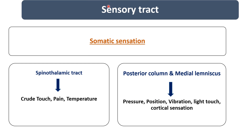There are mainly two sensory tracts for somatic sensations. One is the spinothalamic tract, also known as the anterolateral sensory system, in which the anterior spinothalamic tract carries crude touch and the lateral spinothalamic tract carries pain and temperature. The posterior column and medial lemniscus, also known as the posterior sensory system, carries deep sensation — pressure, position, vibration — and also light touch and cortical sensations.